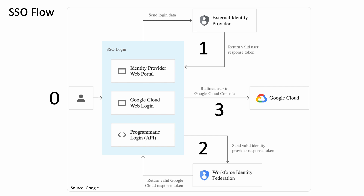Once that valid user response token is received, focusing on the bottom half of the screen, it then sends that valid response token — obtained from the identity provider — to Workforce Identity Federation in GCP. Google Cloud will then return a response token, and the user is redirected to the Google Cloud console, able to use that token provided by Workforce Identity Federation. At no point are we actually syncing credentials. Workforce Identity Federation works in conjunction with the external identity provider in that exchange mechanism, where the token is exchanged for an access token for Google Cloud.